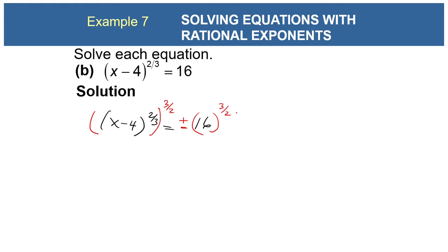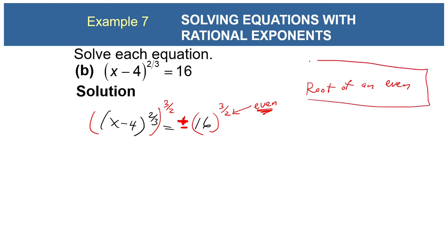Why do I need to do that? Because if you look at the denominator, it is even, so technically we're going to take a root of an even number. Remember: when you take the square root of both sides you have to put the plus or minus. That's why I put the plus or minus — we're taking the square root of both sides because this denominator has a 2 in it. Don't forget that plus or minus.